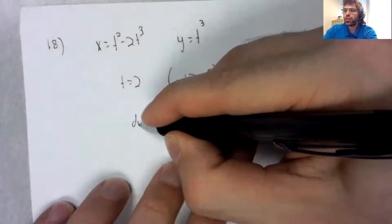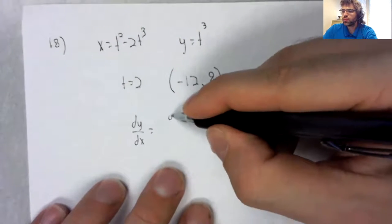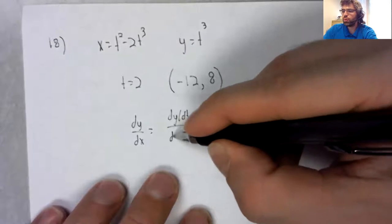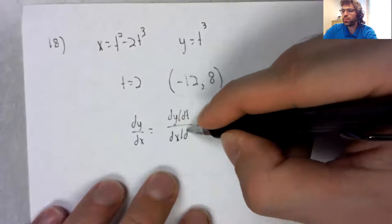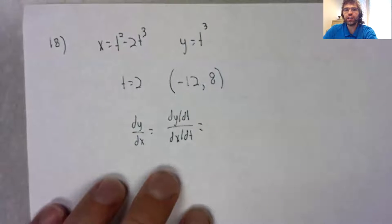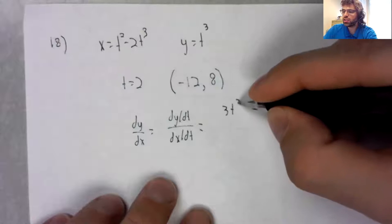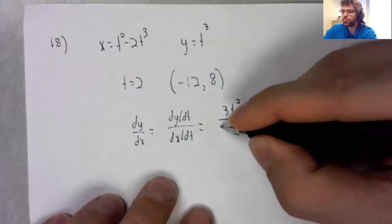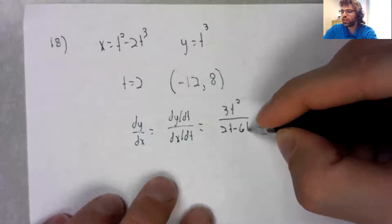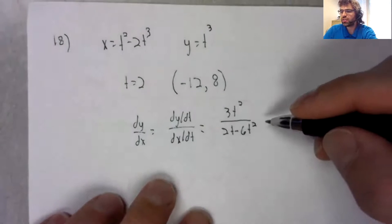And we need a slope. And to find this slope, we take two derivatives and divide them. The derivative of y with respect to t, the derivative of x with respect to t.